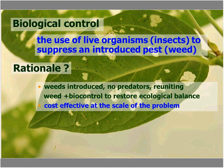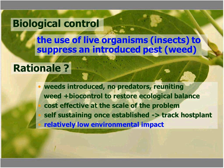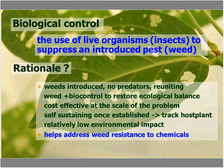Biological control is cost-effective at the scale of the problem and is often used as a last resort. These biocontrol agents are self-sustaining — they can move with the host plant, track the host plant, break control in an area, and as the host plant pops up in new areas, move to those areas. It has a relatively low environmental impact compared to other control tactics, and it can help address weed resistance to chemicals, which is becoming a problem.